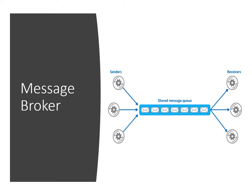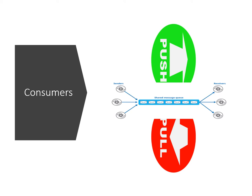Many consumers can take messages from the same queue, but each message is retrieved by exactly one consumer. There are basically two modes of behavior for consumers to retrieve messages, known as pull or push, as illustrated on the slide. While the exact mechanisms are product specific, the basic semantics are common across technologies.